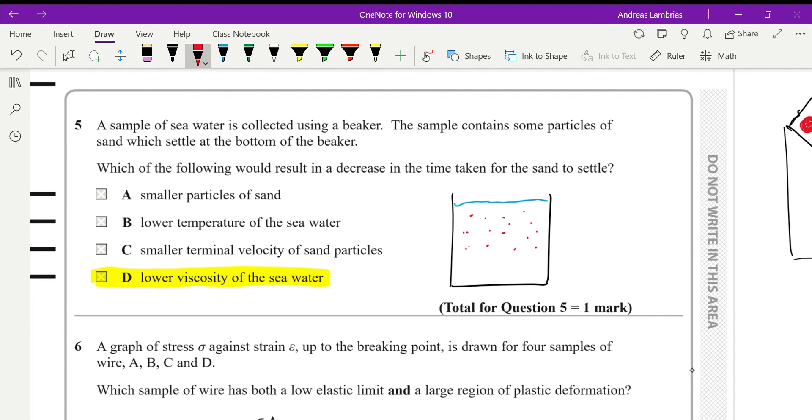Why not the rest? If we had a smaller terminal velocity, that means the sand particles would have moved slower. So that wouldn't decrease the time, that would increase the time. Lower temperature of the seawater: remember that if we have low temperature in liquids, that results in high viscosity. So high viscosity, more resistance in flowing. Therefore, again, longer time for the sand to settle. And a smaller particle of sand: there's no effect of the size of the particles on the movement within fluid. So this won't affect the time. Therefore, it's D.